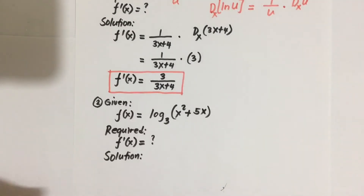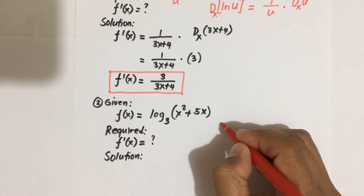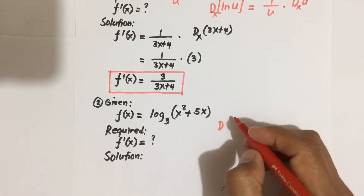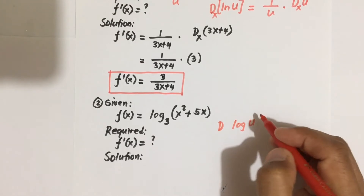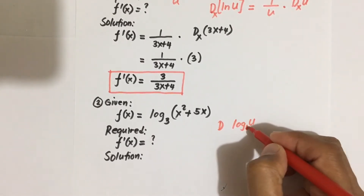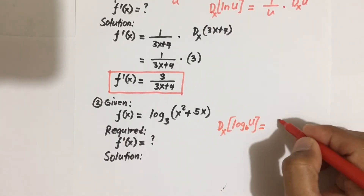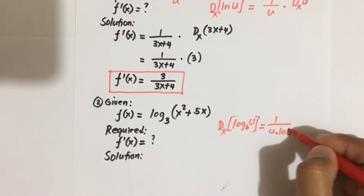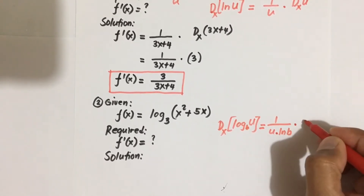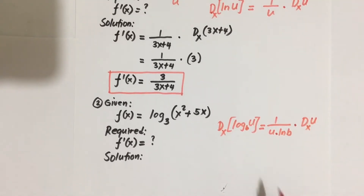For this given function, we will apply the formula for the derivative of a logarithmic function: the derivative of log base b of u with respect to X is equal to 1 over u times ln(b), times the derivative of u with respect to X.